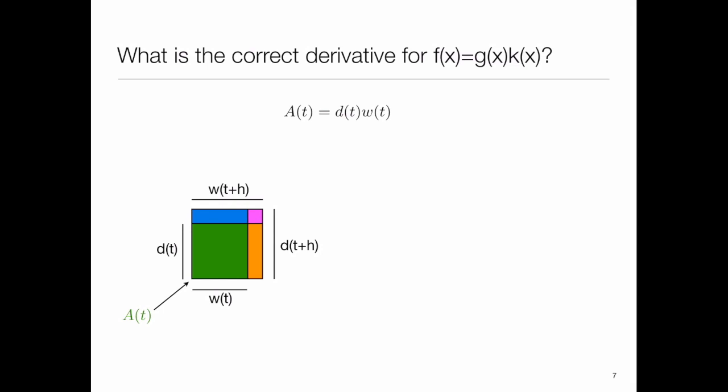Let's break this up into pieces. The area of the new size of the rectangle will be formed of four parts: the green, the blue, the orange, and the pink. The first one, the green one, is just A of t, which is d of t times w of t.